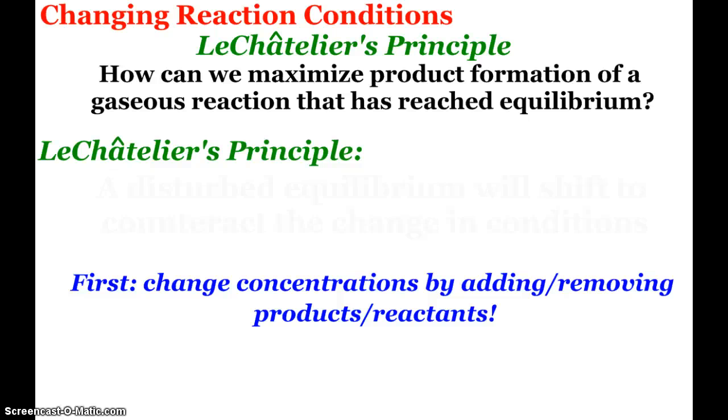One thing chemists are always looking at is how we can obtain the maximum amount of product from a reaction. This typically depends on our reaction conditions. Since we're studying equilibrium right now and focusing mainly on gaseous equilibriums, we can look at how can we maximize product formation of a gaseous reaction that has reached equilibrium.